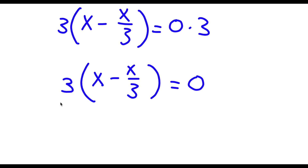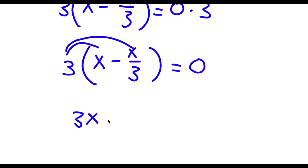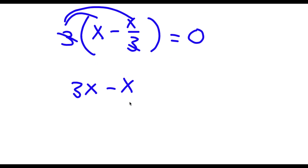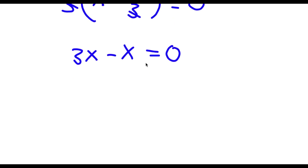Now I'm going to go ahead and evaluate 3 times x minus x over 3. To do this, I'm going to multiply 3 by all the terms in the parentheses. 3 times x, that's 3x, and 3 times negative x over 3 is simply going to be negative x because these two 3s cancel out. So now I have 3x minus x is equal to 0. Now 3x minus x, that's simply equal to 2x. So now I have 2x equals 0.